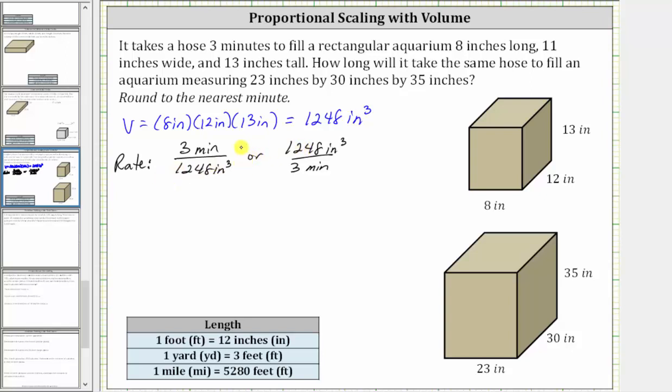The next step is to find the volume of the larger aquarium, shown here, where the volume of the large aquarium is equal to 23 inches times 30 inches times 35 inches, which is equal to 24,150 cubic inches.